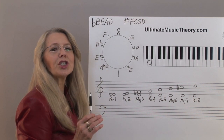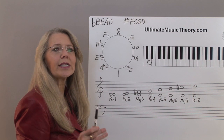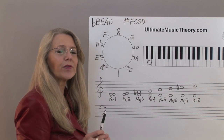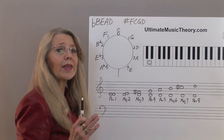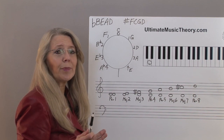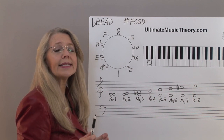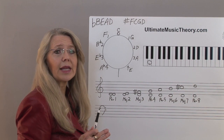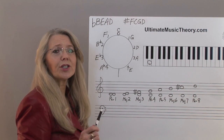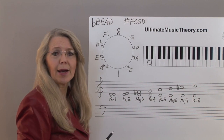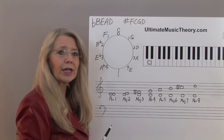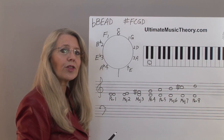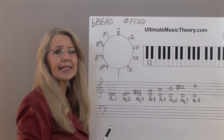To change a major interval into a minor interval, we lower the upper or top note one semitone or half step. The only intervals that can become minor are a second, third, sixth, and seventh.